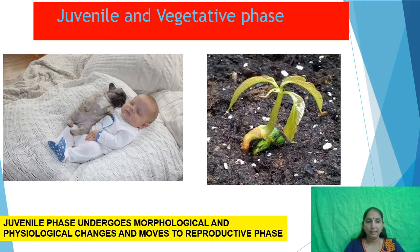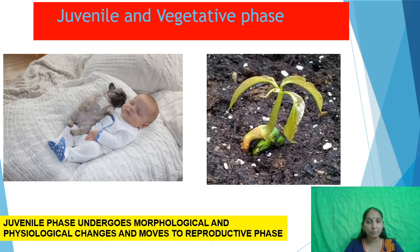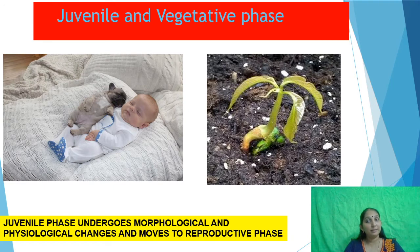The juvenile phase undergoes morphological and physiological changes. Morphological means external changes in the animal or plant, and physiological change means there will be hormonal changes inside the body. Slowly the juvenile phase changes to the reproductive phase. In the reproductive phase, the organism is producing gametes and is ready for reproduction.